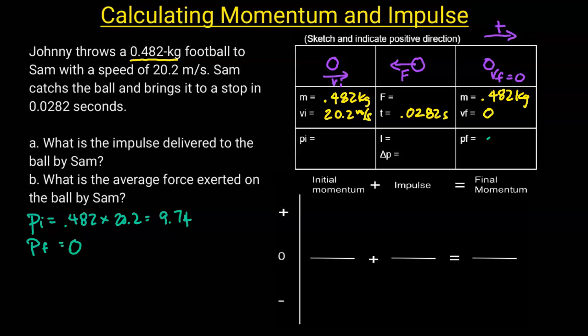So this will be 0 since it's not moving at the end, and initially it's 9.74 kilograms meters per second. From here, I can calculate the delta P. The delta P is going to be the final minus the initial: 0 minus 9.74 is going to be negative 9.74.